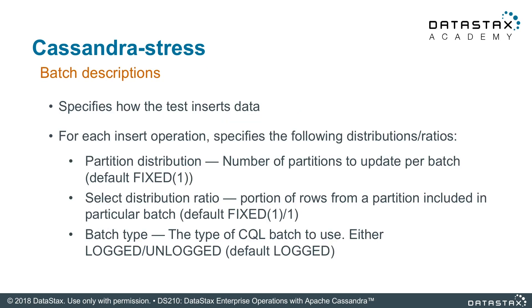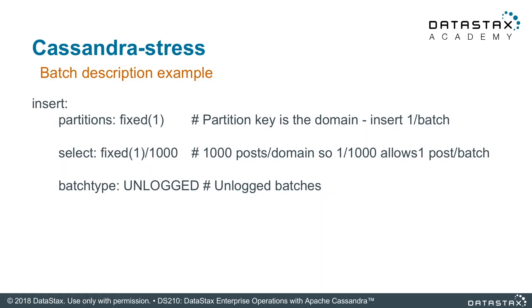Another section in the YAML describes batch configuration. This is where you would configure the batch type, the distribution ratio, and partition distribution, which is the number of partitions to update per batch. Here is where you will configure the Cassandra Stress batch parameters.